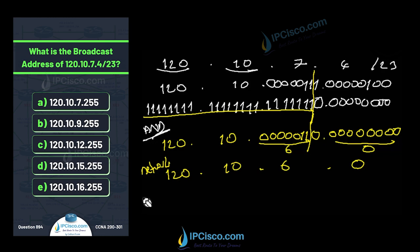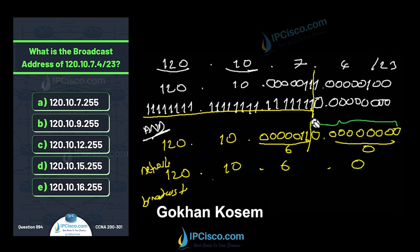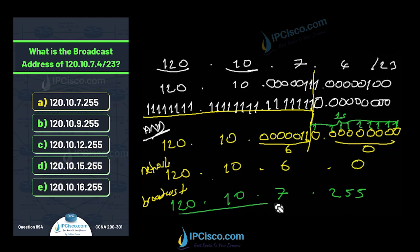Now for the broadcast address, all host bits are set to ones. The third octet host bits become 00000111, giving us 7, and the fourth octet all ones gives 255. So the broadcast IP address is 120.10.7.255.